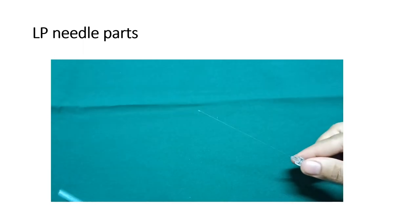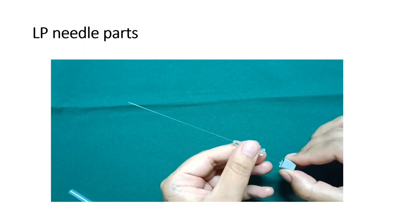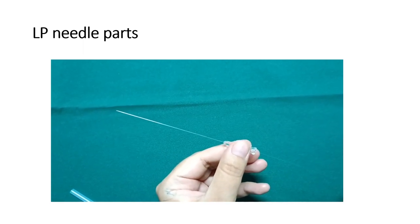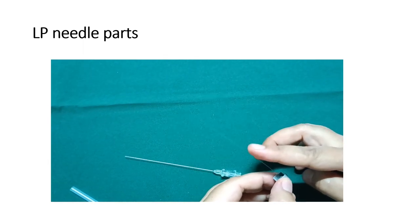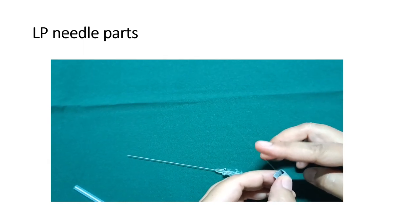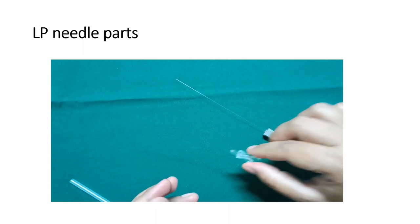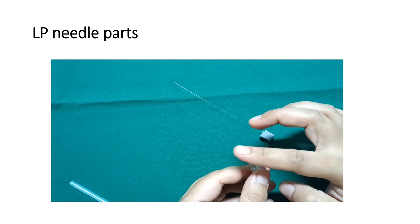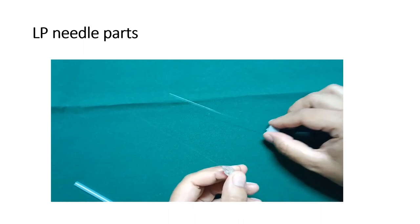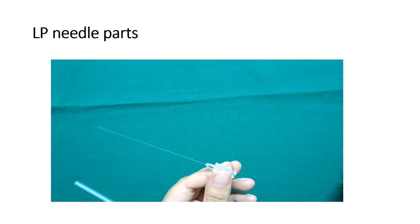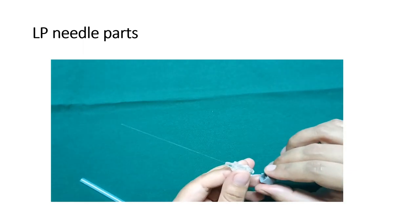Now about the lumbar puncture needle parts. In this video you can see the lumbar puncture needle, also called the spinal needle. I am removing the stylet from the needle — this is the stylet, this is the stylet holder, and this is the lumbar puncture needle, and this is the needle hub. I am now reinserting the stylet into the lumbar puncture needle.